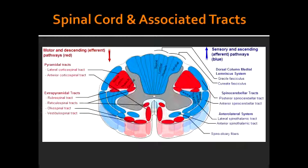There's also the lateral spinothalamic tract for pain and temperature. You also see the dorsal columns, which are responsible for pressure, vibration, touch, and proprioception. The dorsal column is broken up into two parts: the fasciculus cuneatus, responsible for the upper body and extremities, and the fasciculus gracilis, responsible for the lower body and extremities.